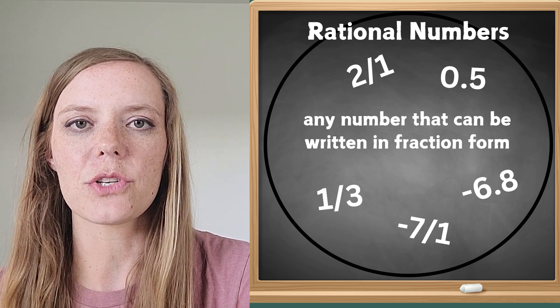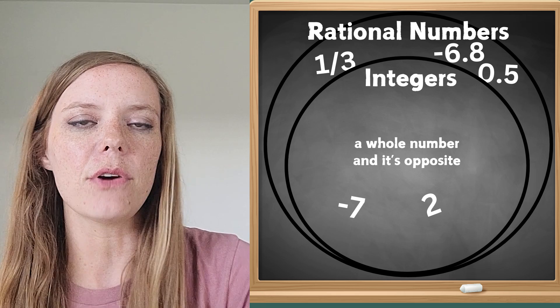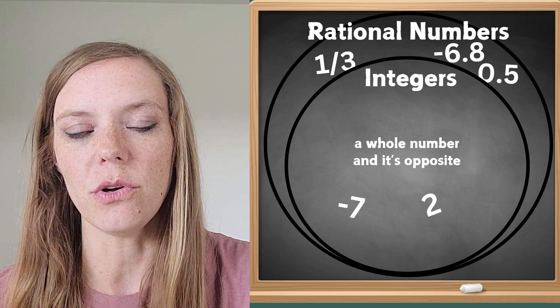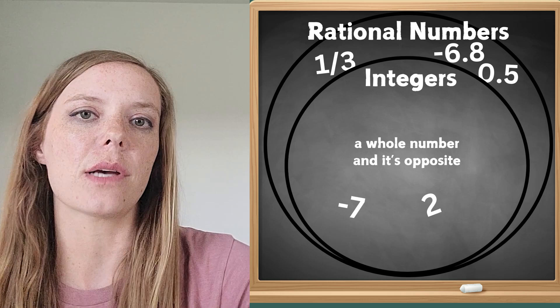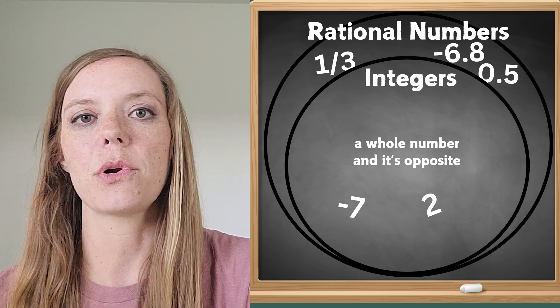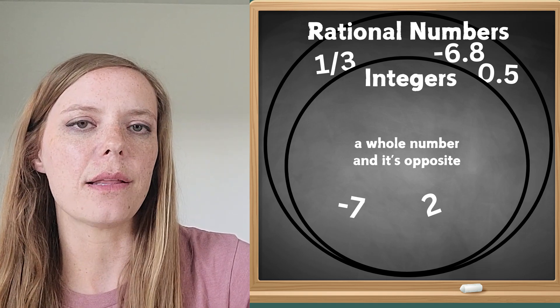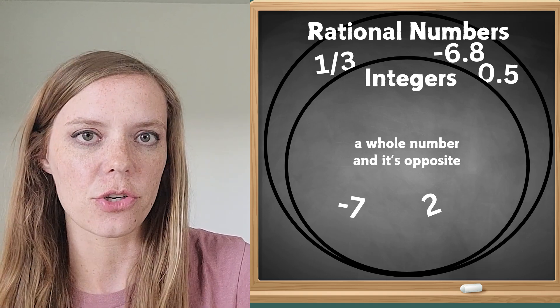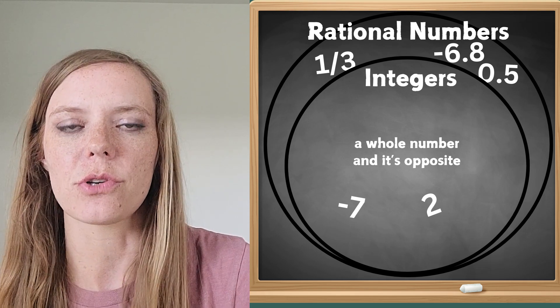The next category we're going to talk about is integers. So I'm going to put that inside of our rational numbers circle. An integer is just a whole number and its opposite. So it can include a number like 2 and negative 2. Let's stop and think a little bit. Why is it that I can put integers inside of the rational numbers circle?